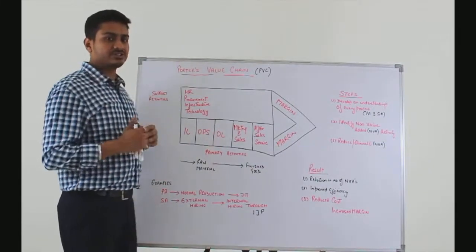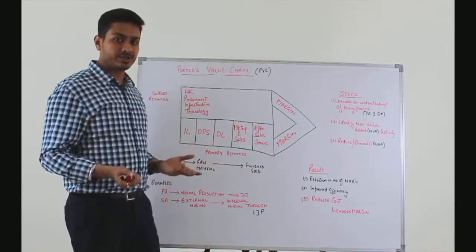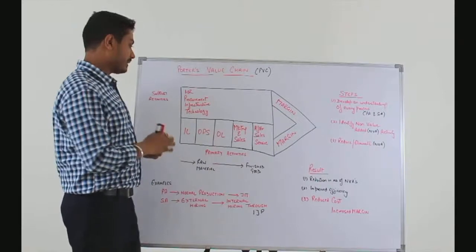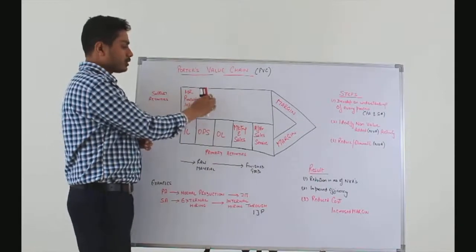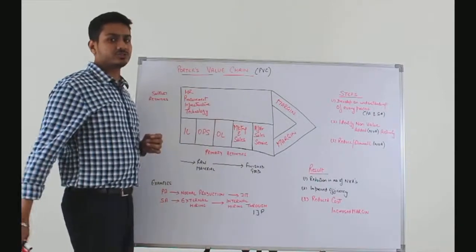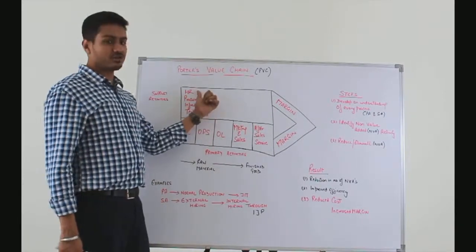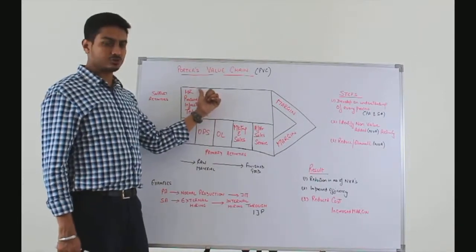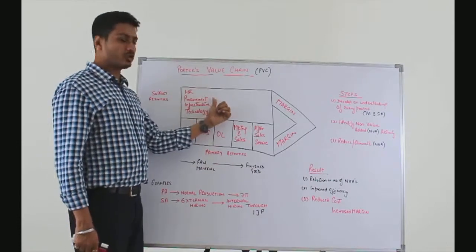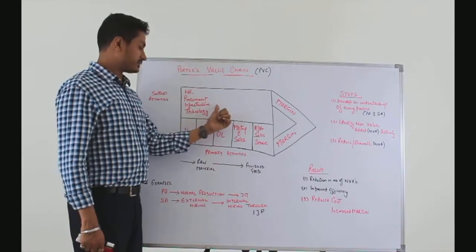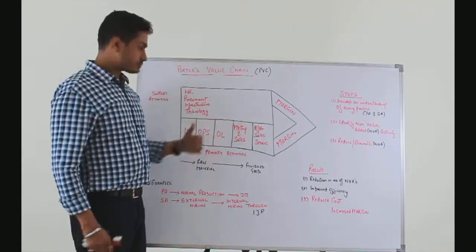Every organization has different support activities. Primarily, the model talks about four support activities: HR which is human resources, procurement, infrastructure, and technology.